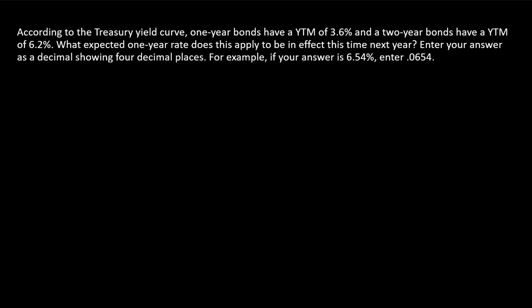This is a yield curve problem dealing with expectations theory, where we think about long-term rates on the yield curve as conveying investors' expectations about a series of future short-term rates. What are we looking for? We're looking for an implied one-year rate to be in effect one year from now, a future one-year rate. Let's see what we're starting with.